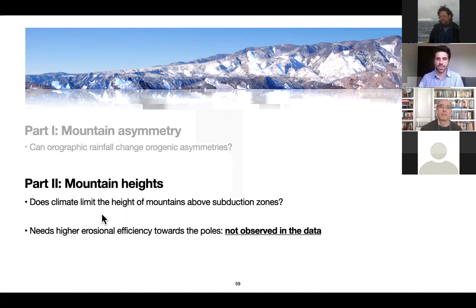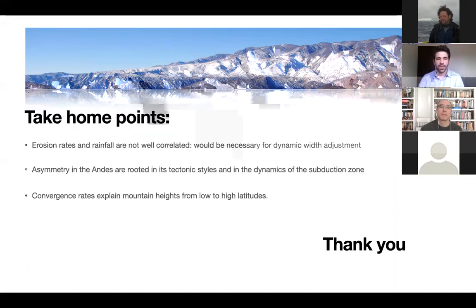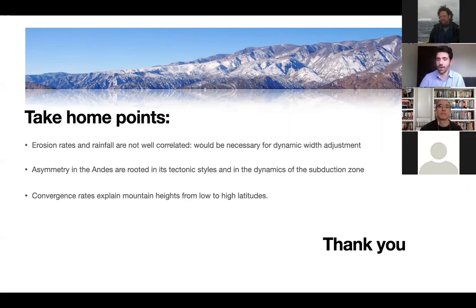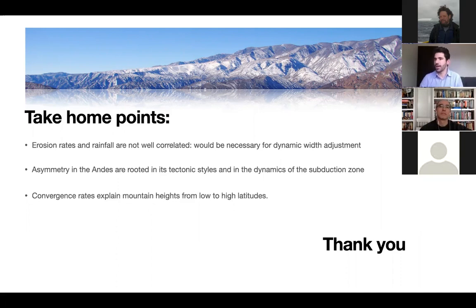The take-home points: erosion rates and rainfall are not well correlated. Both the asymmetry and elevation of mountains can be easily explained by the tectonic end members — the convergence rates or slab-related metrics. Thank you very much for your time, and I'm happy to take any questions.